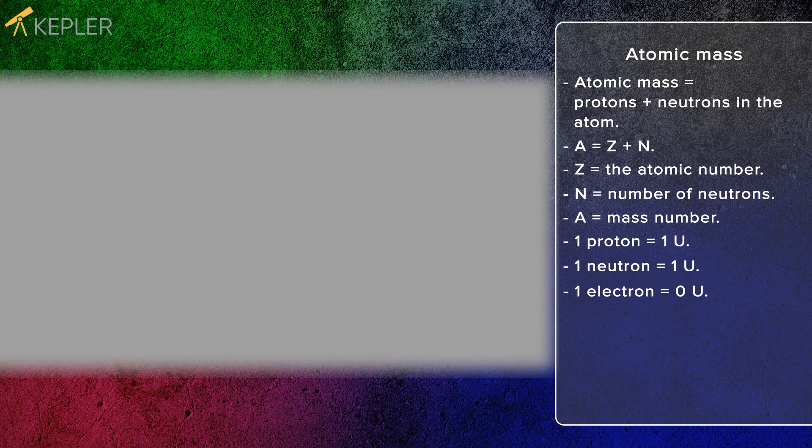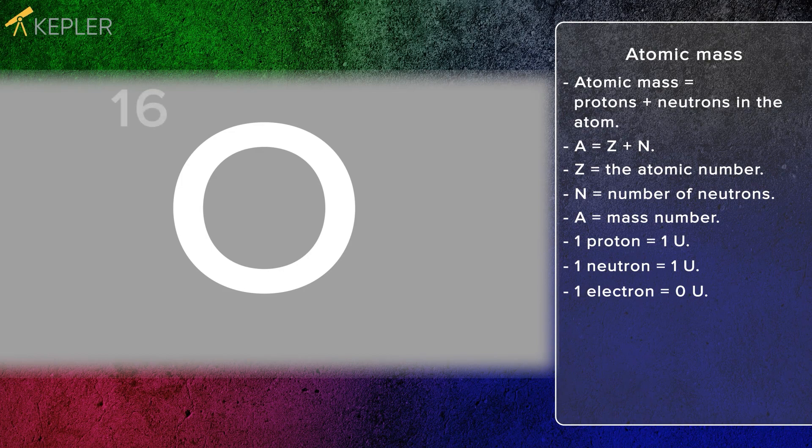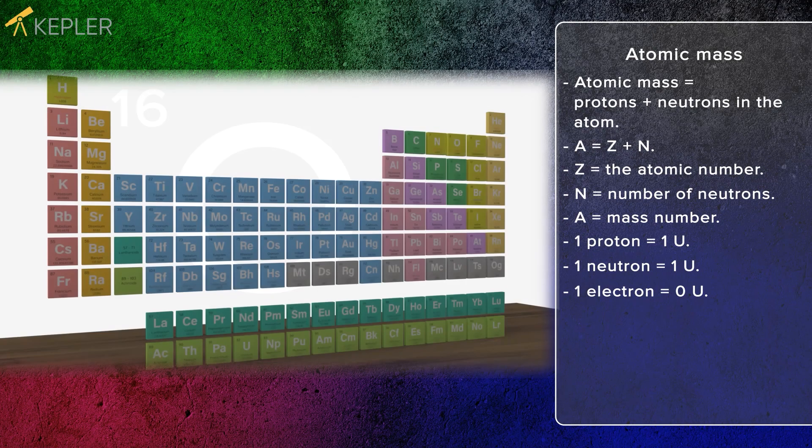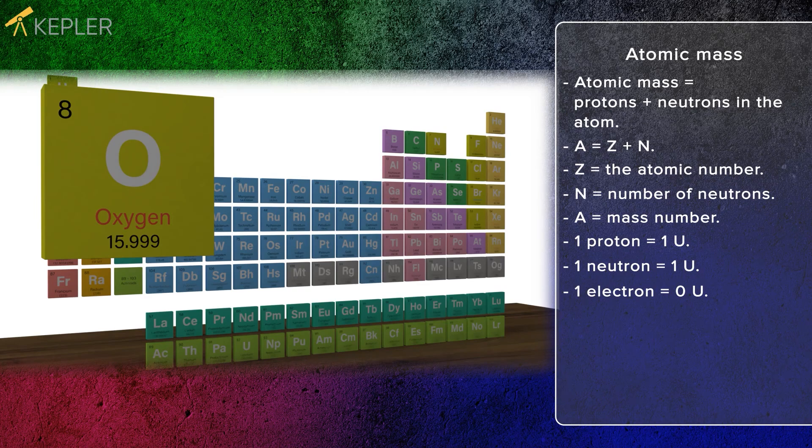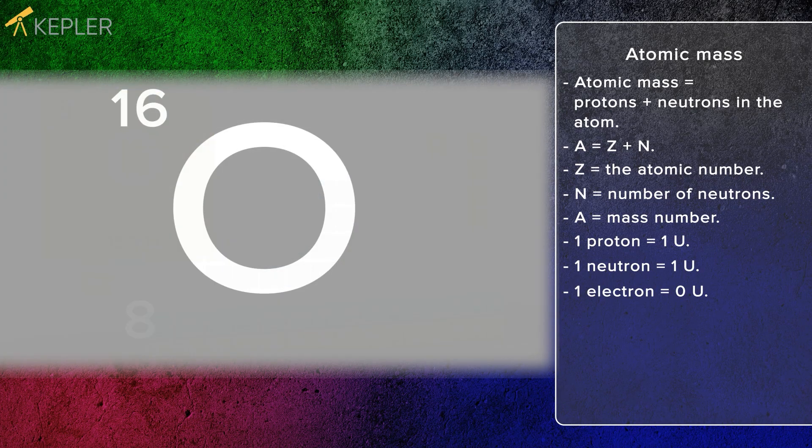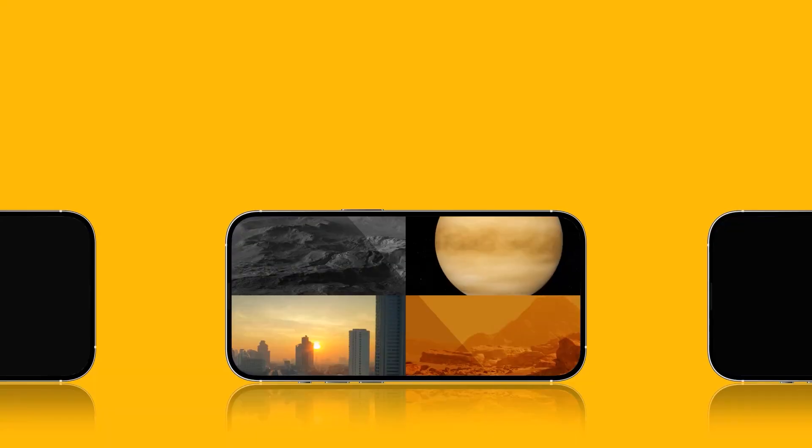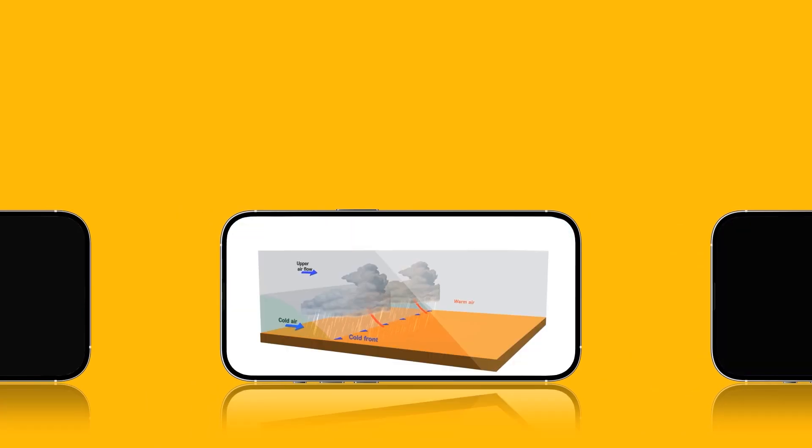In order to describe an atom, you first write the symbol. For oxygen, this is O. At the top left, you write the mass number. Notice that in the periodic system, it is rather the atomic number that is written at the top left corner. In the lower left corner, the atomic number is written.